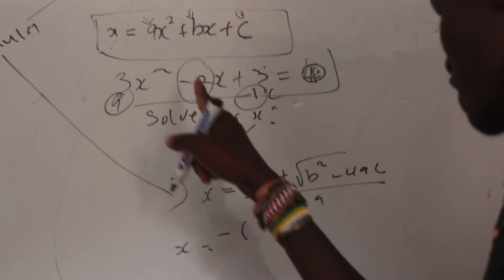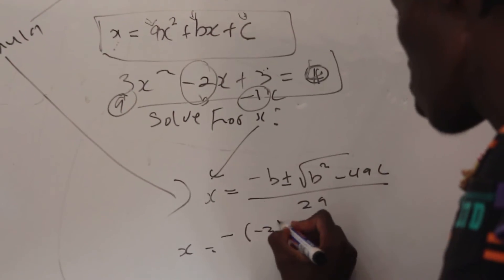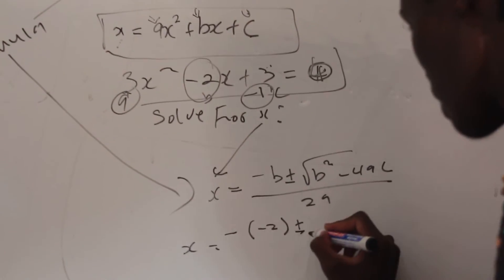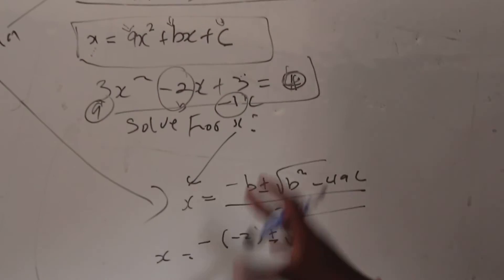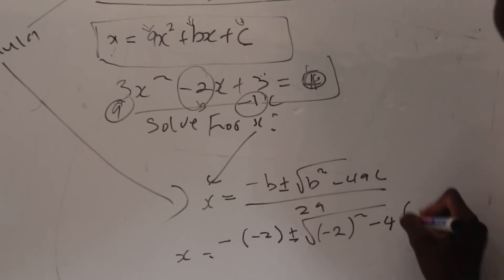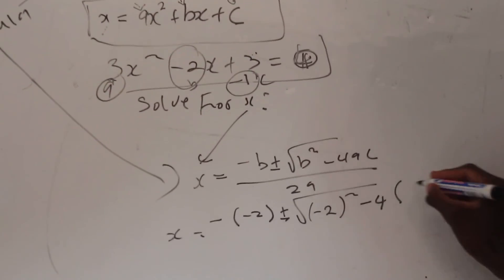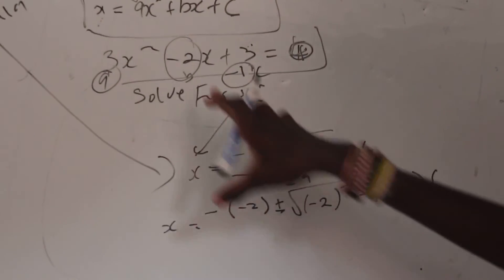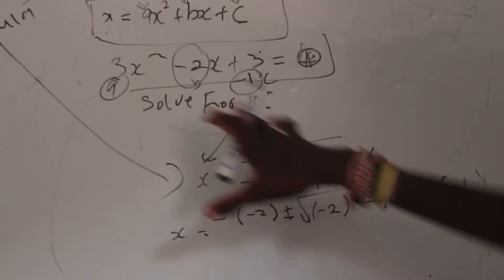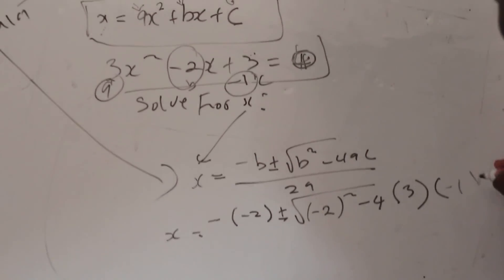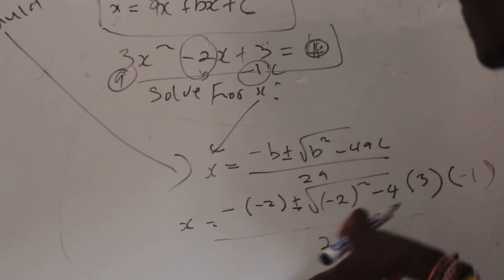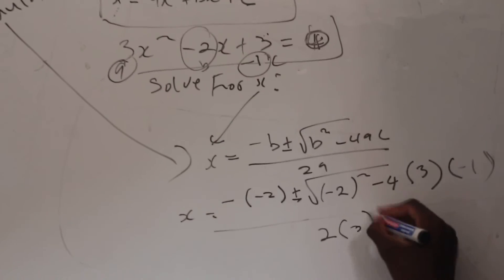Negative, then I open up my brackets. What is my b? I said it's -2. Remember there's a -b, then there's a ± then square root. What's the b again? -2 squared minus 4. What is our a? Open up brackets. Our a is 3, then our c is -1. Please don't make a mistake.